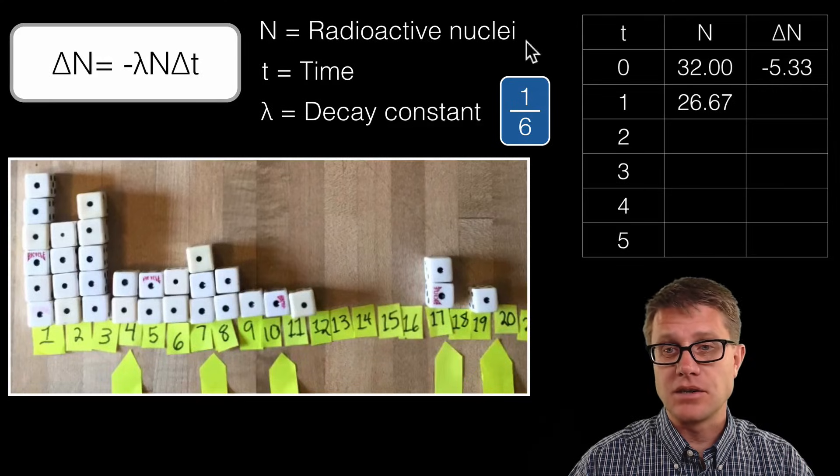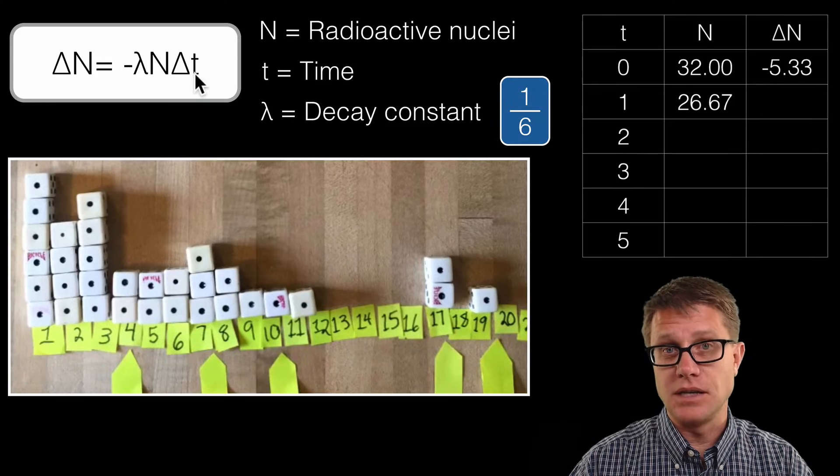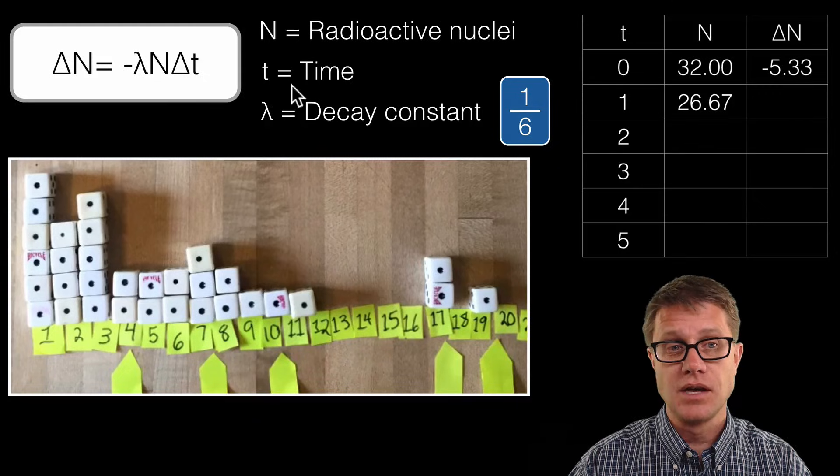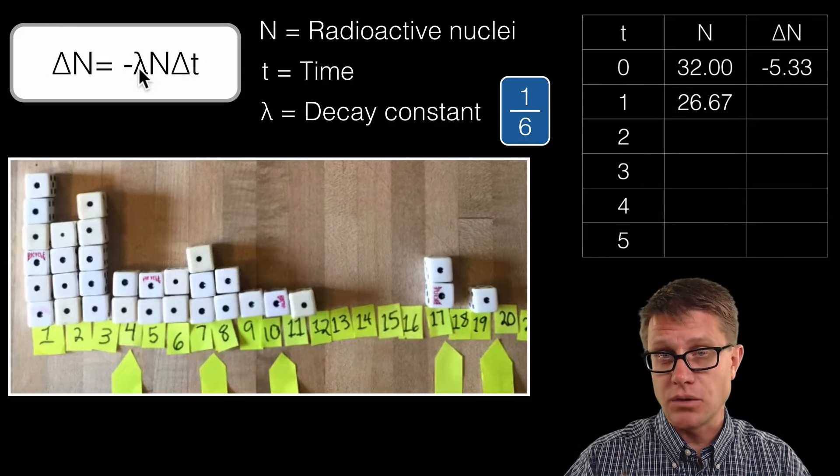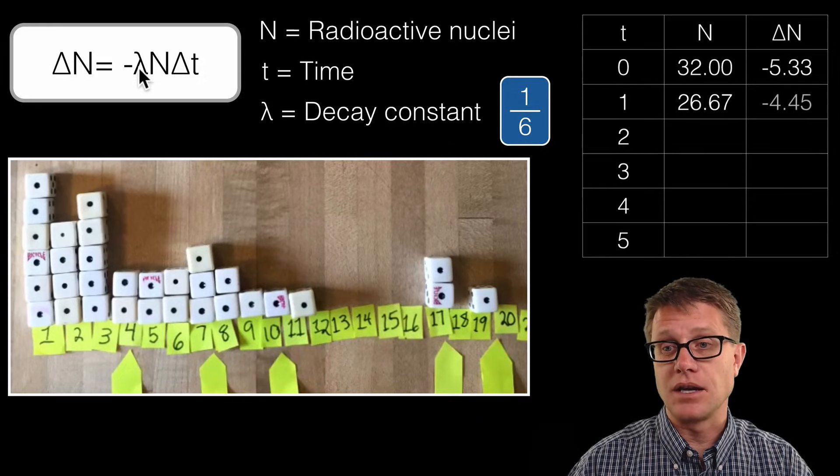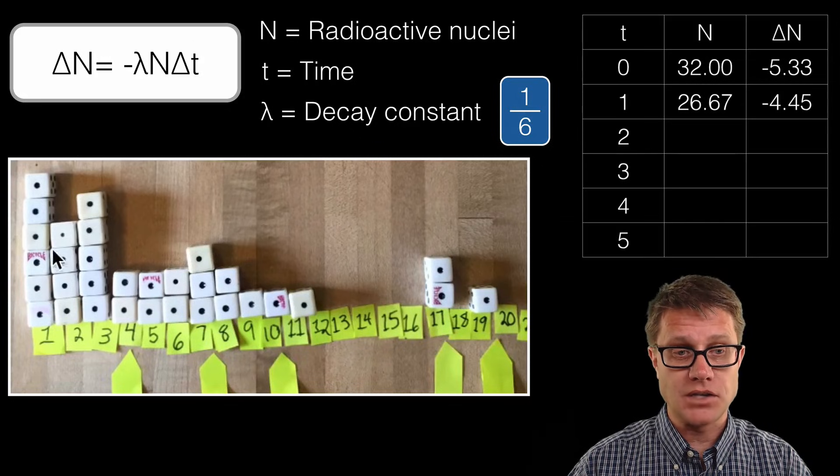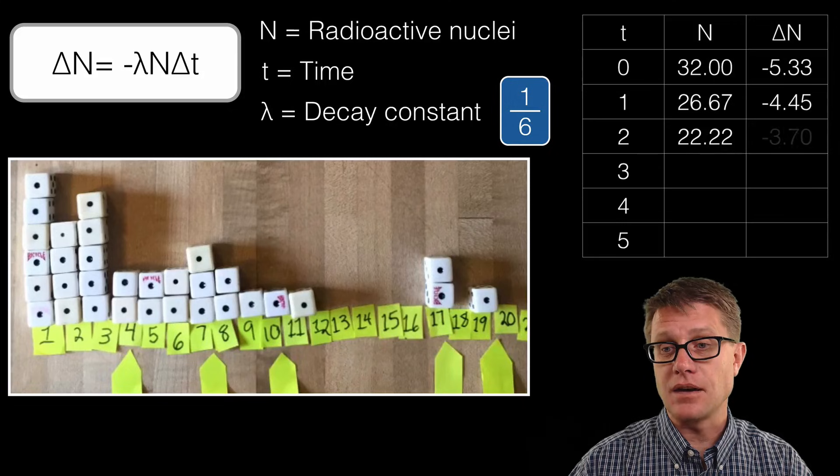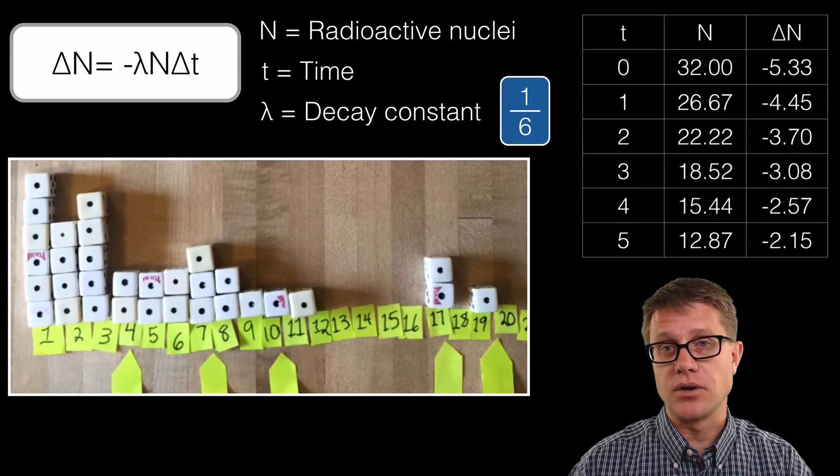Now what do I do? I go back to this formula again. So it is going to be t, which is 1, times my new N, which is going to be 26.67, times my decay constant, which remains constant. And so what I am going to get is negative 4.45. Now how does that match up? It is pretty close to this. So then we subtract that value like that and we could just do this over and over again.